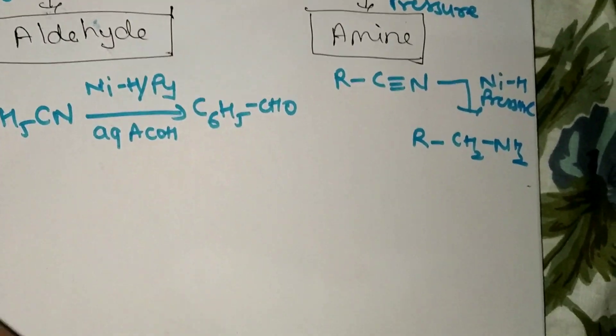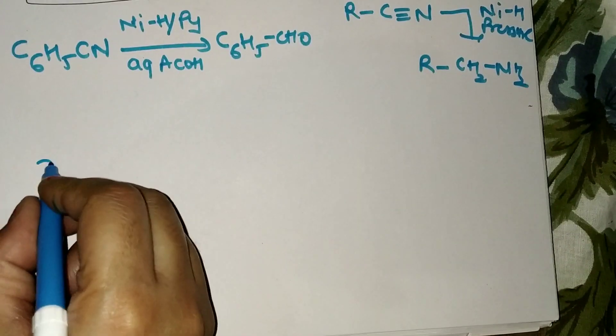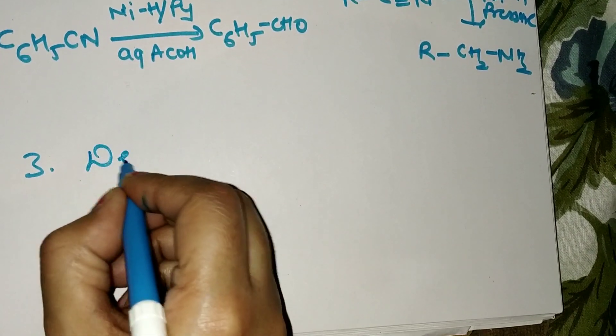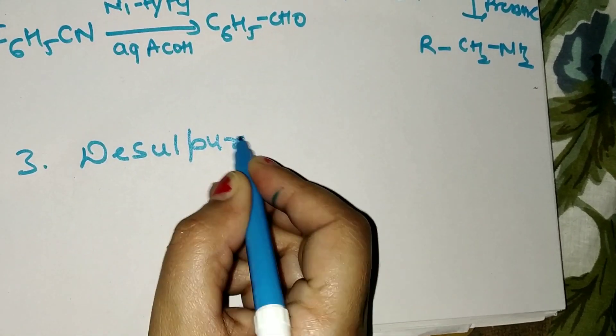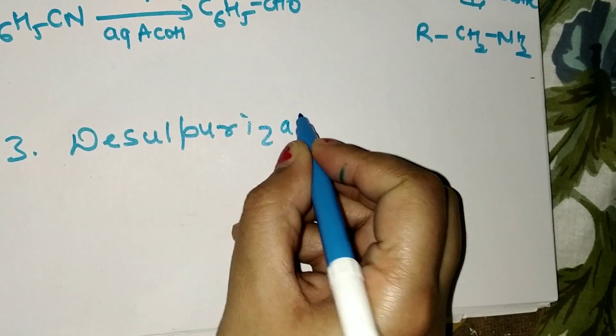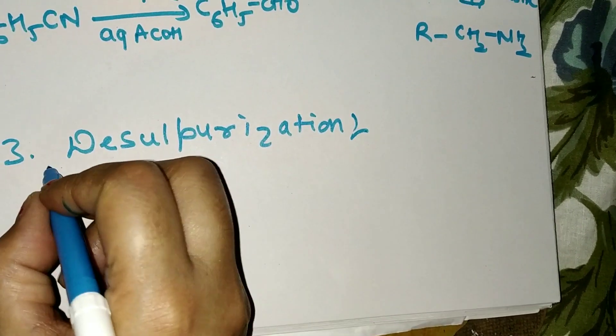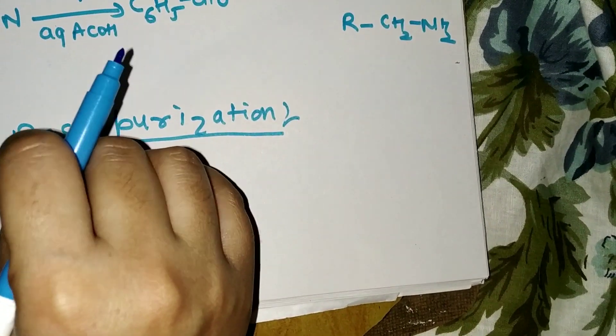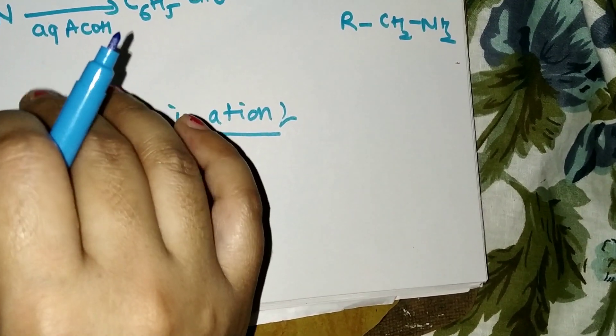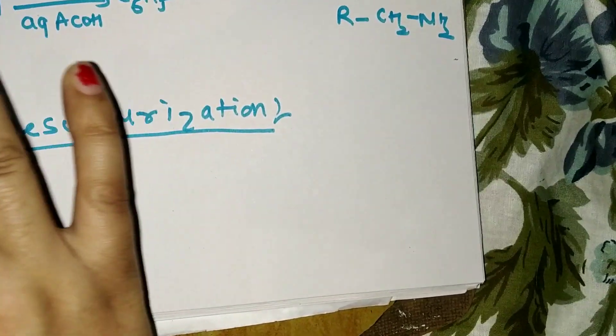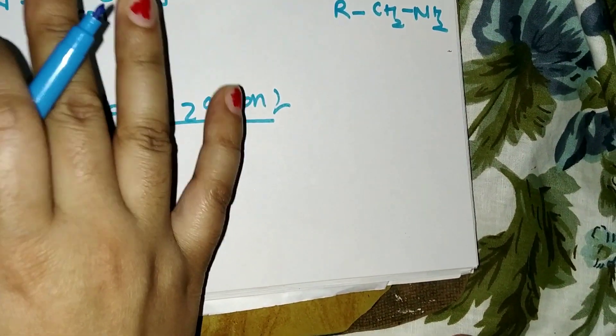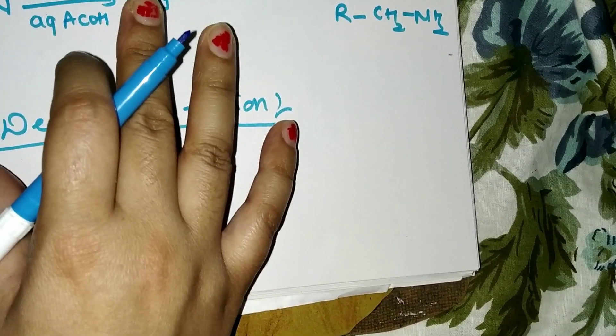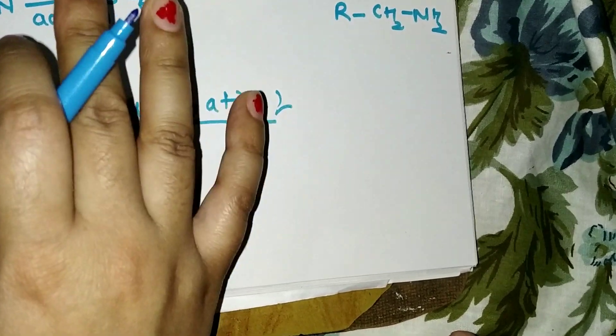Next is desulphurization. Thio alcohols, thio ethers, disulfides, thio amides, sulfoxides, and sulfones are desulphurized by hydrogenolysis with Raney nickel. Hydrogen is not required externally as Raney nickel contains sufficient absorbed hydrogen for the reaction.